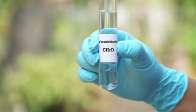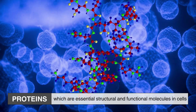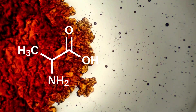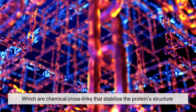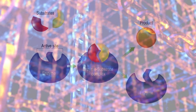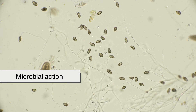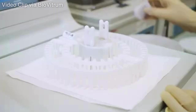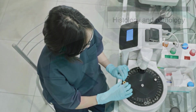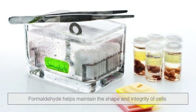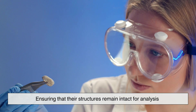Formaldehyde reacts primarily with proteins, which are essential structural and functional molecules in cells. One of the key reactions is with amino groups found in proteins. Formaldehyde forms methylene bridges, which are chemical cross-links that stabilize the protein structure. This prevents proteins from breaking down due to enzymatic activity and microbial action. This fixation process is especially useful in preserving cellular and tissue architecture. In histology and pathology, where tissues are examined under a microscope, formaldehyde helps maintain the shape and integrity of cells, ensuring that their structures remain intact for analysis.